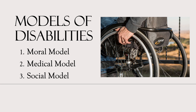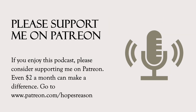Usually contrasted with the medical model is the social model. The social model attempts to distinguish between an impairment and a disability. The social model would say that a brain injury or cerebral palsy would be an impairment, but they would not be disabling in and of themselves. What makes an impairment a disability is when society puts up barriers that disable people with those impairments — buildings that are not accessible for wheelchairs, communication that relies on visuals that blind people cannot see, jobs that rely on social interactions that might be a challenge for an autistic person. If these social issues were fixed, the impairment might remain, but it would no longer be a disability.